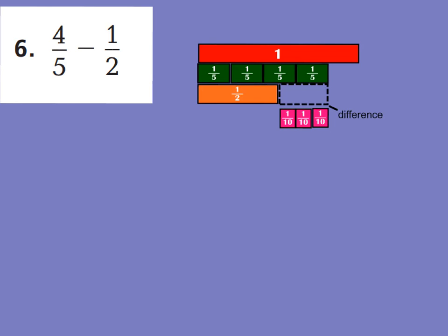All right, let's jump over to number 6. Number 6 says 4 fifths minus 1 half. So, I went ahead and laid down 4 fifths. And then, right below it, I put 1 half. So, we can see that this is the difference that we have to find. Again, 5 and 2, we found on the last slide we did together, had the denominator of 10 that would be common.